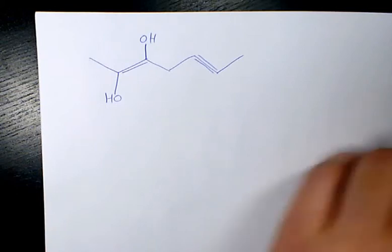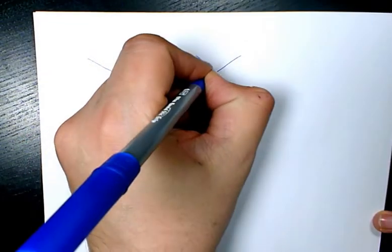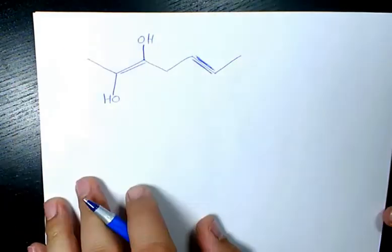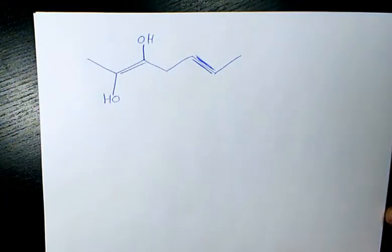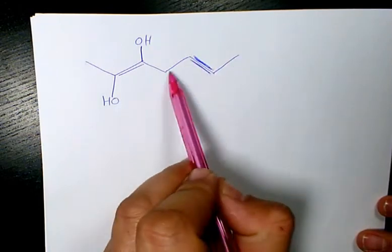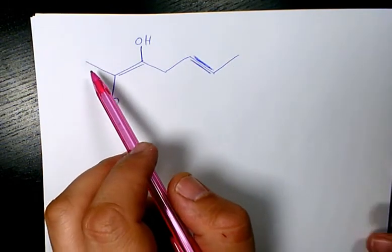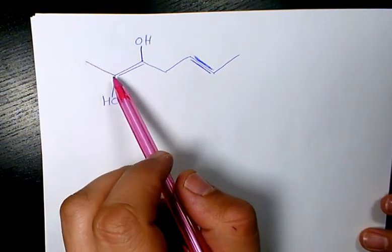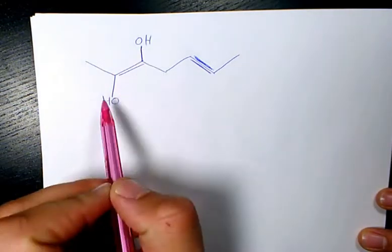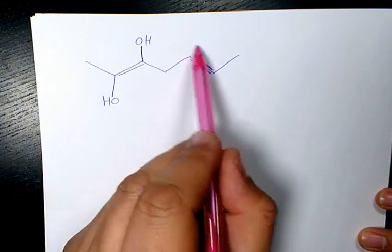What's up guys, this is Massey, welcome to my channel. In this video I want to show you how to name this organic compound. As you can see here, we have one, two, three, four, five, six, seven carbons, so we are dealing with heptane. We have two hydroxyl groups, one double bond, and one triple bond.